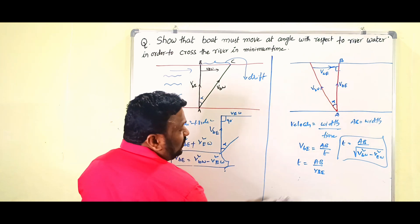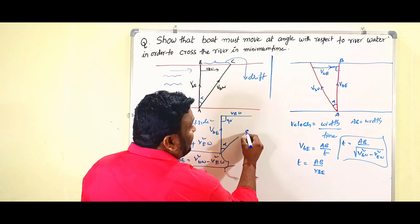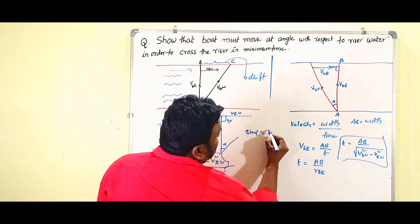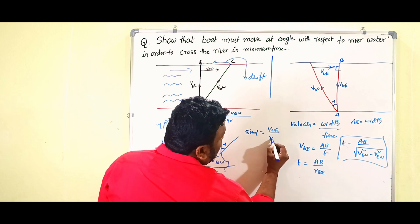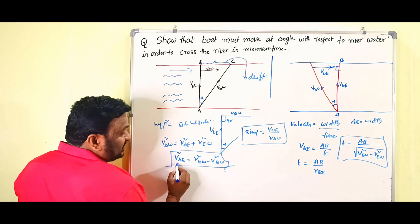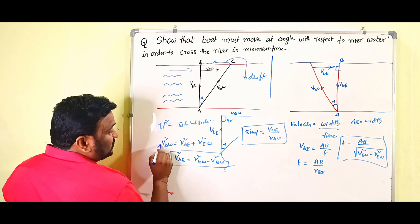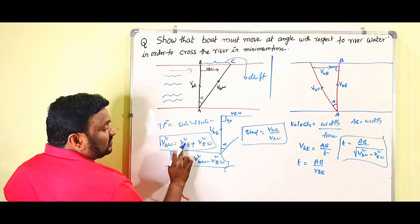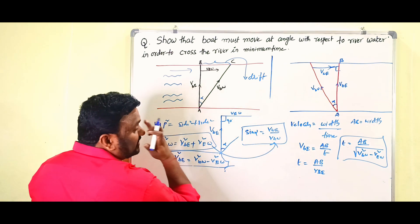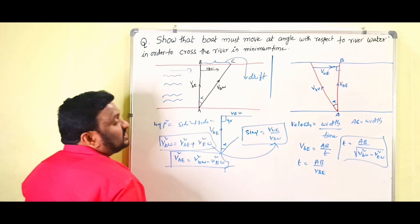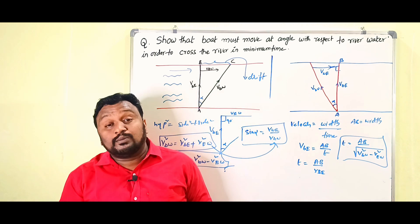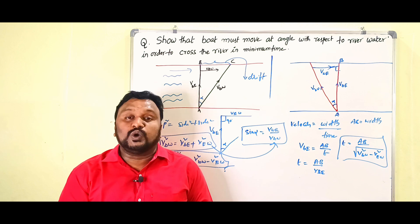Again we write the expression for alpha: sin α = opposite side / hypotenuse = v_we / v_bw. We already have v_bw² = v_be² + v_we², so we can substitute the v_bw value to get the sine value. This is the complete explanation about the motion of a boat in a river. If you understood this, please like, share, comment on this video and subscribe to the channel to get all notifications. Thank you.